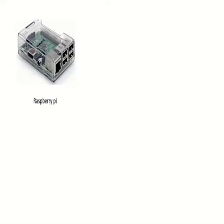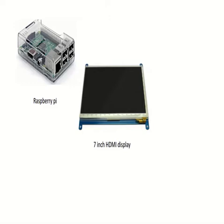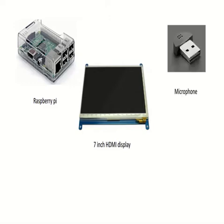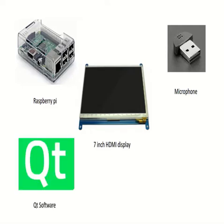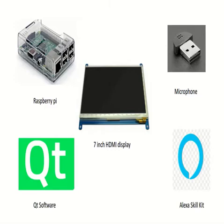We'll be using a Raspberry Pi 3 Model B and a 7-inch HDMI display. A microphone is required to record your voice, and 3.5mm audio jack speakers are required for audio output. Good software is needed to design the calendar display, and the Alexa Skill Kit by Amazon will help generate a voice assistant for the calendar. You will also need a keyboard and mouse for this project.